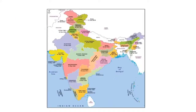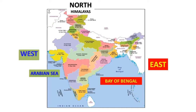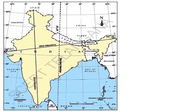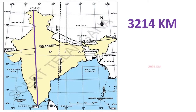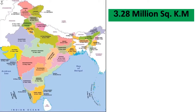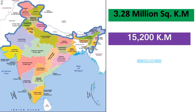Let us see the land boundaries of our country. Our land is surrounded by the Himalayas in the north, the Bay of Bengal in the east, the Arabian Sea on the west, the Indian Ocean on the south, China and Myanmar on the northeast, and Pakistan to the northwest. India measures about 3,214 kilometers from north to south and about 2,933 kilometers from east to west. India is the 7th largest country in the world with a total land area of 3.28 million square kilometers, a total land frontier of 15,200 kilometers, and a coastline of 6,100 kilometers.